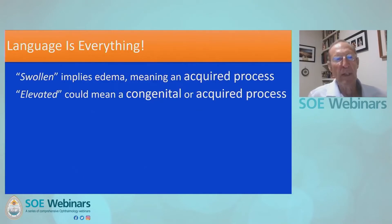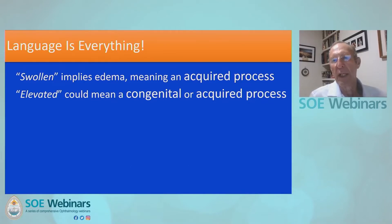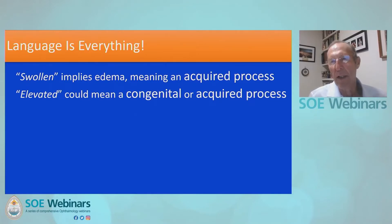The first thing we have to clear up is language. In English, when we say swollen, we usually mean that the optic disc is edematous, and that means the patient has an acquired process. If we use the term elevated, that could mean either a congenital or an acquired process. So you can see there is a distinction here.